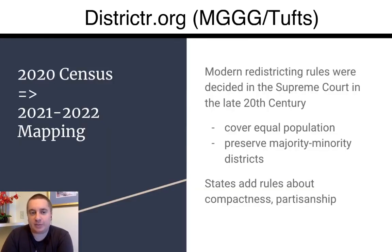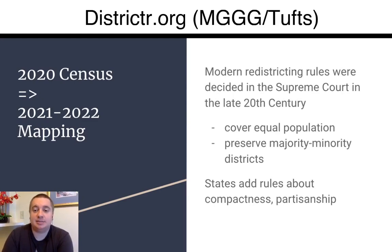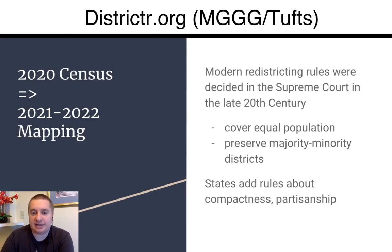This is really important right now because we just had the 2020 election, and over the next couple of years there's going to be a redistricting process in all the states — both the U.S. Congress, state house, state senate, and also city and county level, and even school board districts have to be redrawn so that they all have an equal population.